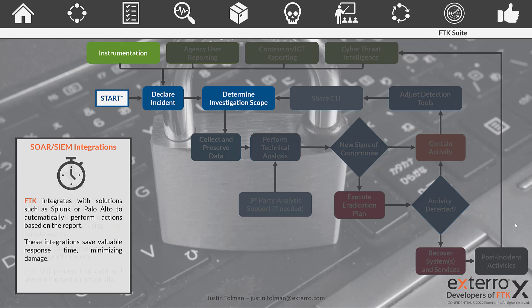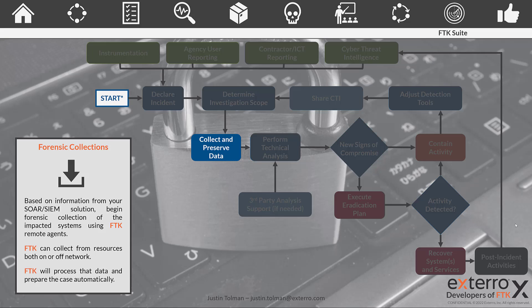Based on the report, we want to start to collect and preserve the data, and that's what FTK does really well. Using the FTK agent, we can collect information from endpoints whether they're on or off the network, and you can choose what type of information to collect based on the report from your SOAR or SIEM solution. That can be pre-programmed so that it reacts accordingly and automatically. The FTK agent can collect from Linux, Mac, and Windows machines on or off your network. Being automated and tied to your SOAR and SIEM solution means this happens very quickly right as the vectors are being detected, so you're getting the most fresh and relevant data collected and preserved in a forensic format.